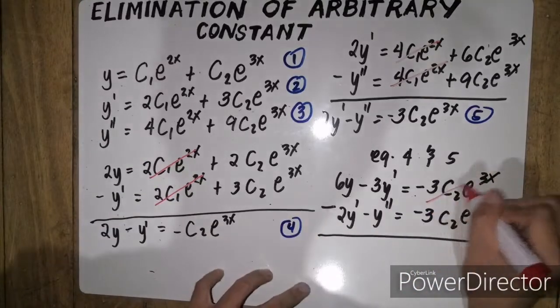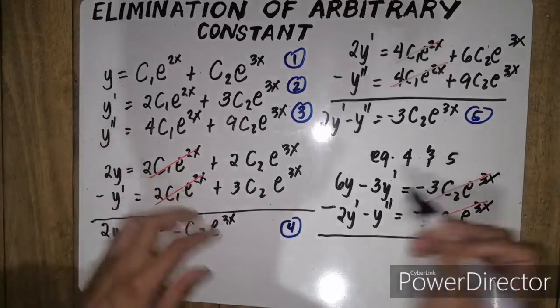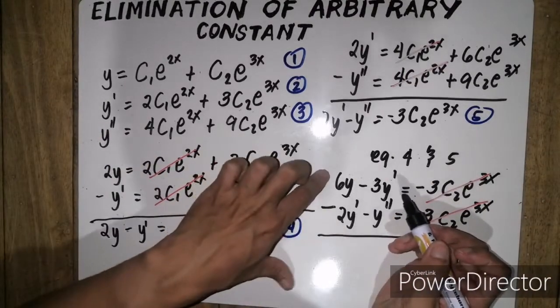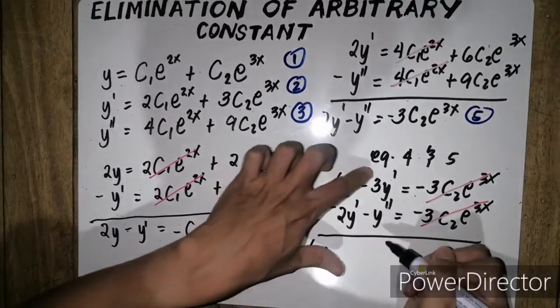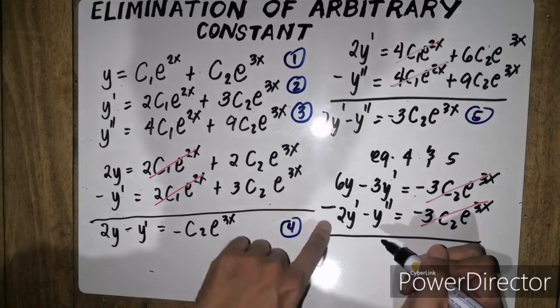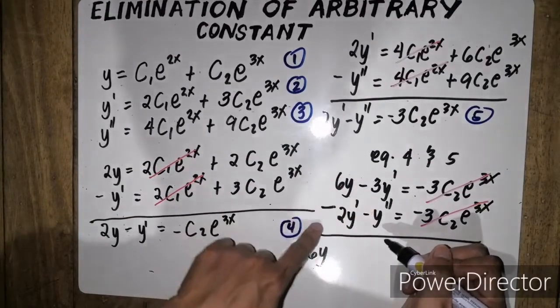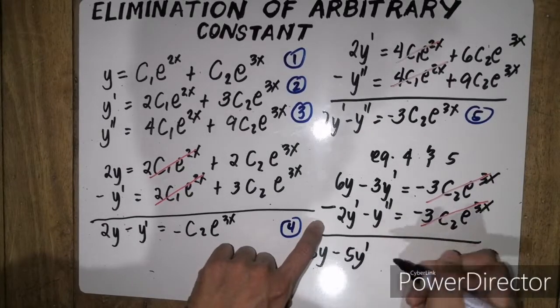So, cancel na. That means, wana na tayong arbitrary constant. So, evaluate na lang natin ito. Si 6y, so mag-isa lang si 6y, so we have 6y. Si negative 3y prime, meron ditong 2y prime. So, negative 3y prime minus 2y prime is simply negative 5y prime.